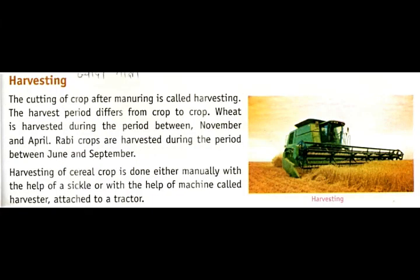The next process is harvesting, done after the crop is completely prepared. Harvesting involves two steps: cutting of the crop and threshing. In the manual process, we cut the crop first, and then the grains are separated from the crop through threshing. For example, wheat is harvested this way. This is how harvesting in the manual process is done.